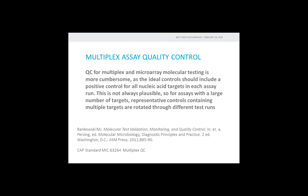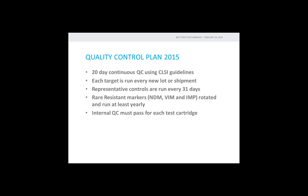Quality control for large multiplex assays differs from other testing. To my knowledge, there is not a single positive control that includes all targets. However, CAP standards do allow for the use of representative controls, and rare targets can be rotated over the quality control intervals. Our 2015 QC plan included a 20-day continuous quality control using CLSI guidelines, followed by running each target with each new lot and shipment. Representative controls were run every 31 days, rare markers were rotated and run at least yearly, and the internal QC needed to pass for each test cartridge.